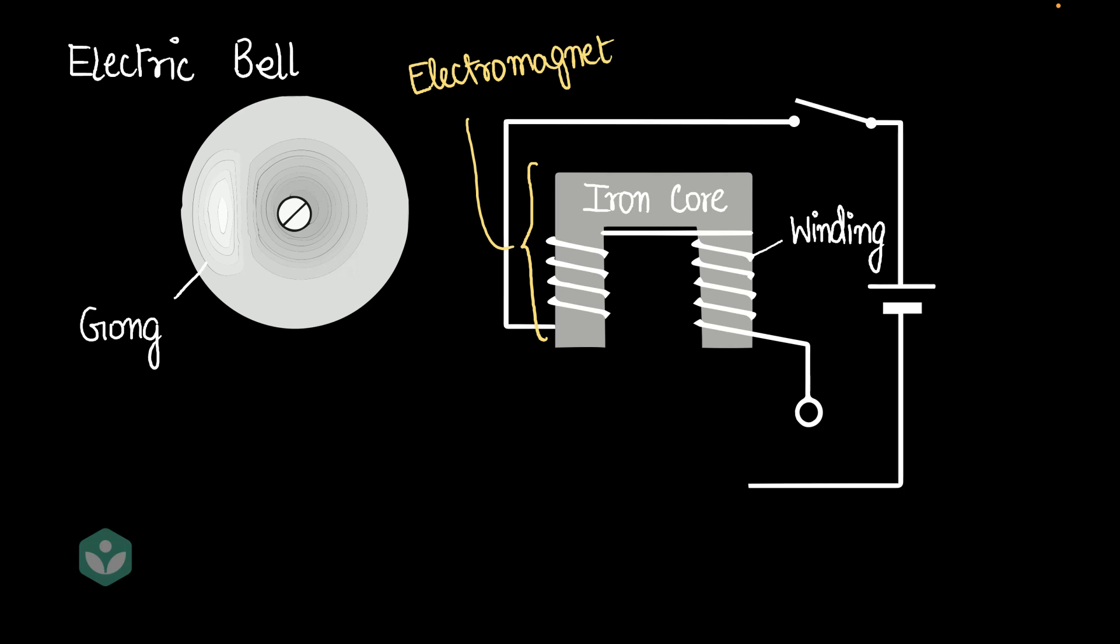So to pass current through the winding, we place a switch and we connect the winding to a cell. Obviously, this end of the circuit is still not done. Let me show you what comes there.